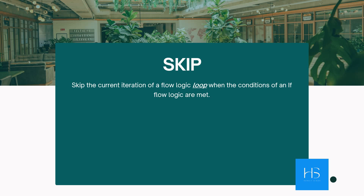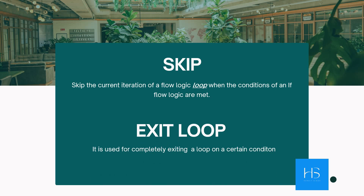That's the for each loop and the do-until loop. I have explained the difference between these two loops in a separate video — the link is in the top right corner and in the description as well. Next is Exit loop. If you want to completely exit from a loop on a certain condition, then you can use the exit loop action.